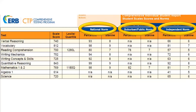Your student's scale scores are then compared to three different norm groups. A norm group is a group of students from other schools who also took the CTP around the same time of year and in the same grade as your student. The national norm is comprised of a representative sample of students from across the nation, and this test was last nationally normed in 2018. The suburban norm is comprised of students from actual suburban public schools who administered the CTP, and the scores are averaged over the last three years. The independent norm is comprised of students from actual independent schools who administered the CTP, and the scores are averaged over the past three years.